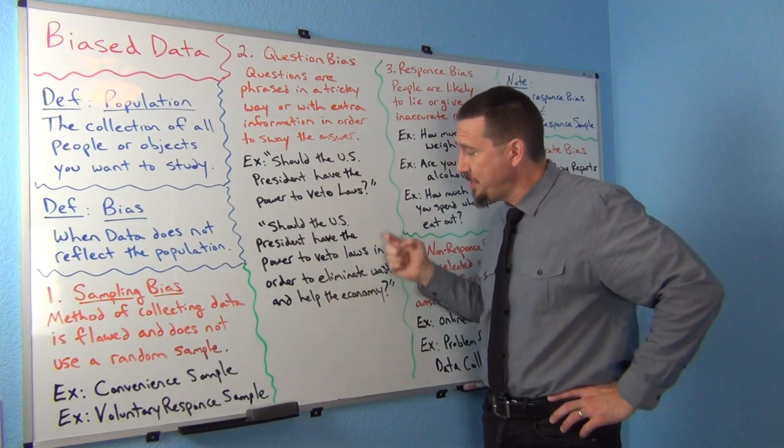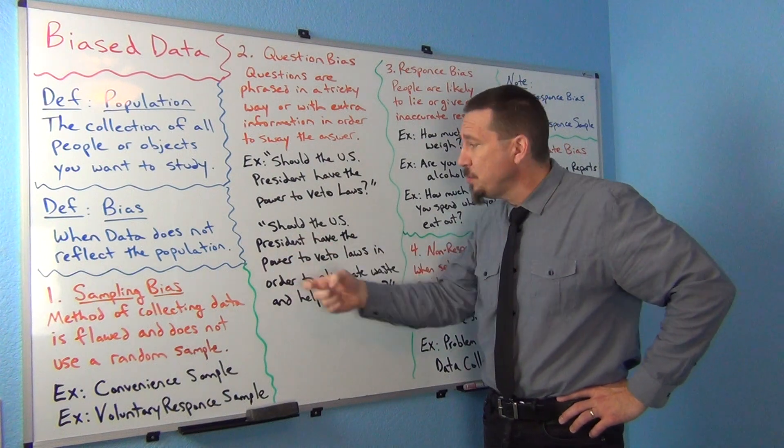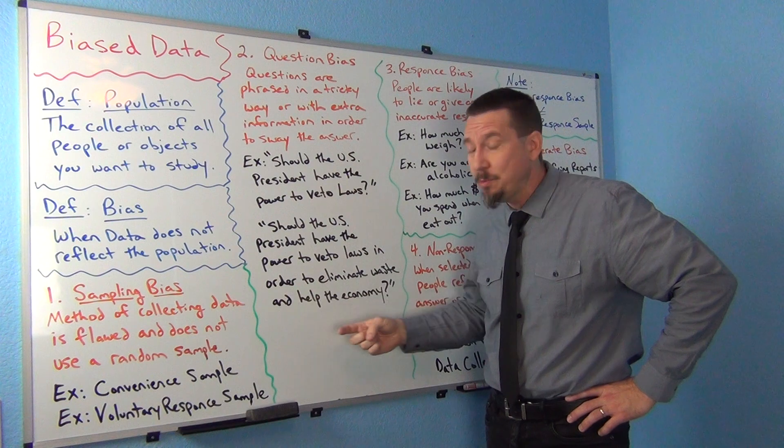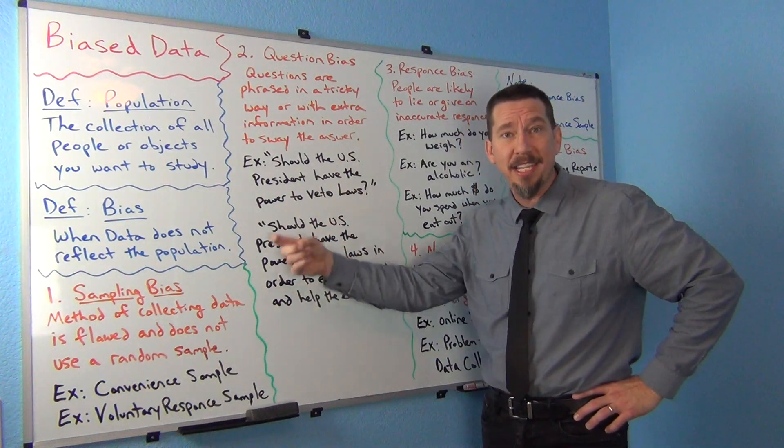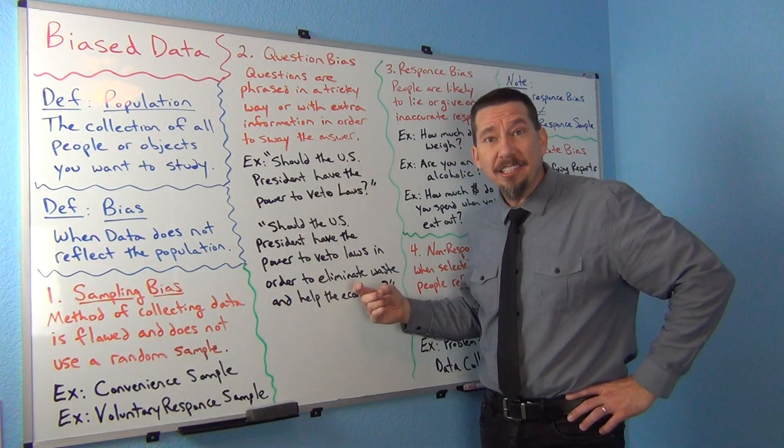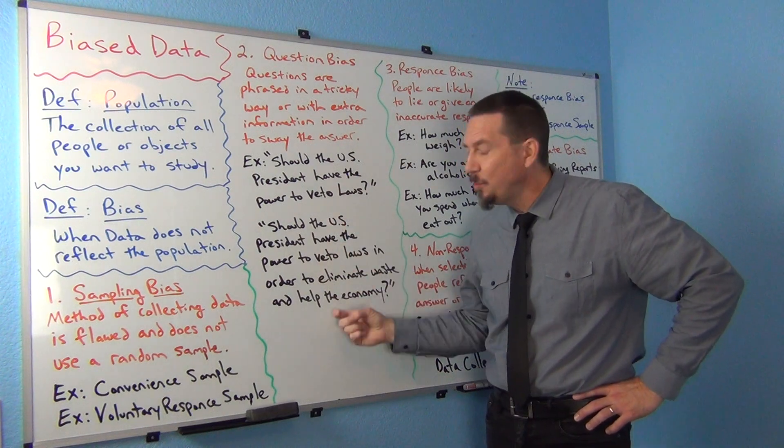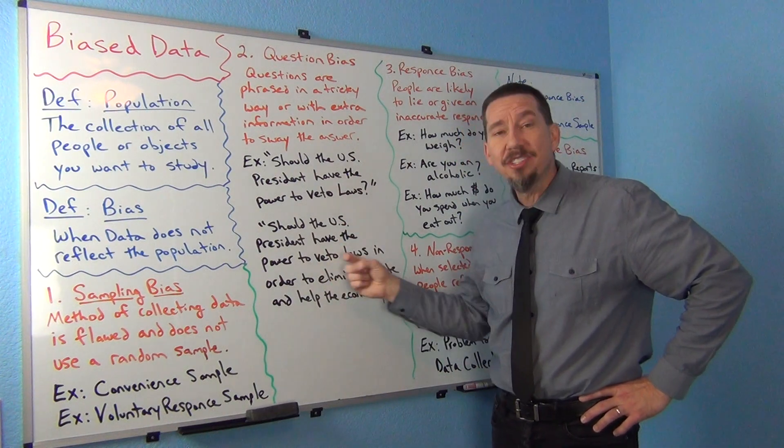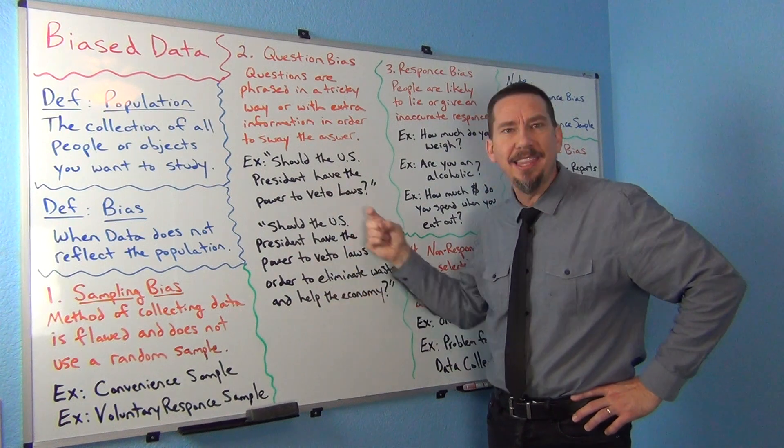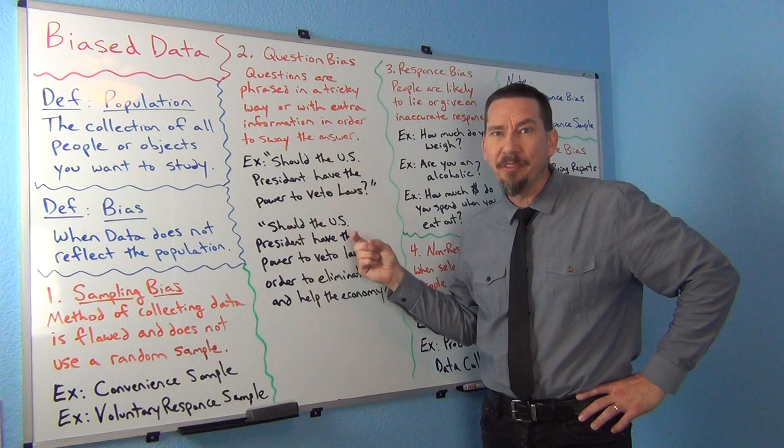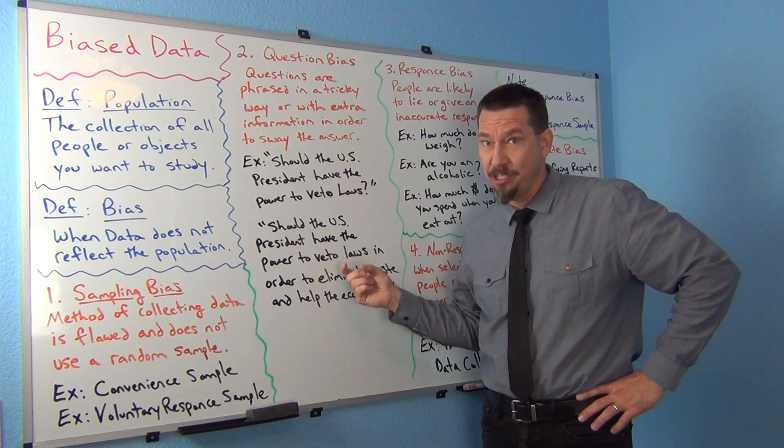So we got a large percentage of people said yes to this. So even though this was a simple random sample, one of the best sampling techniques we have, it was a large simple random sample, usually that's good. But this one was not reflective of the population at all because of the way they phrased the question. They forced a lot of people. Almost everybody that read this said yes.